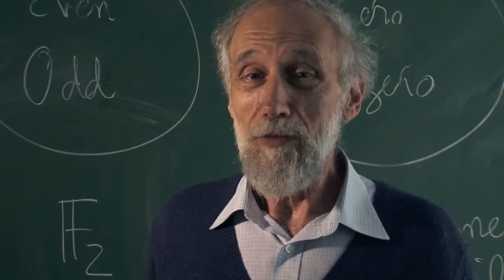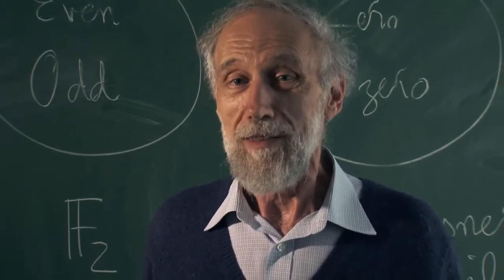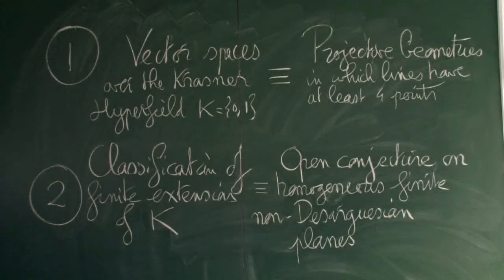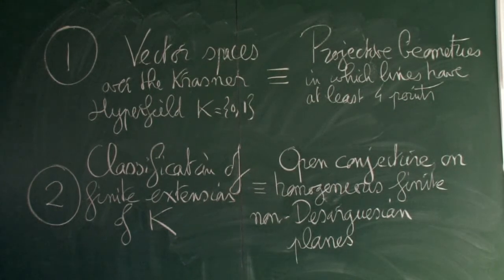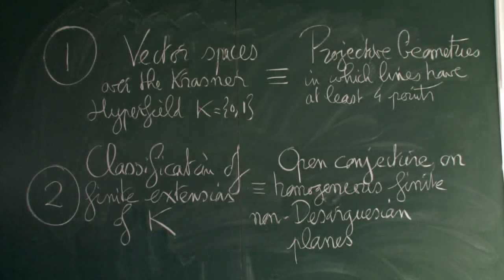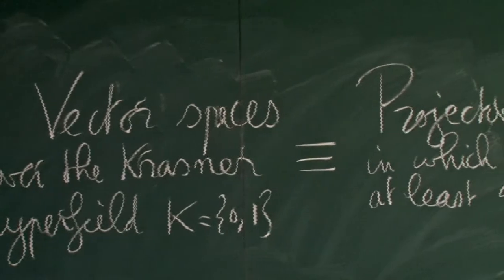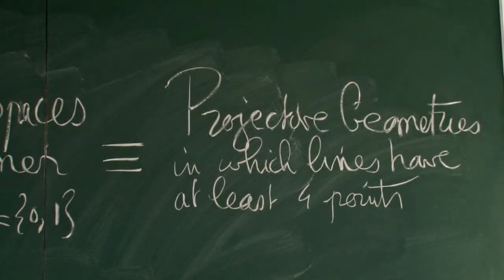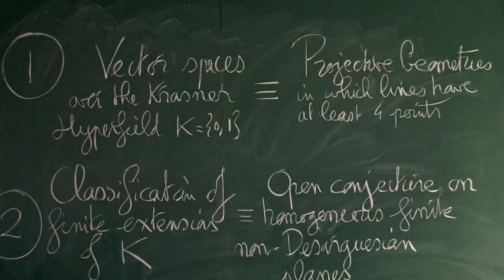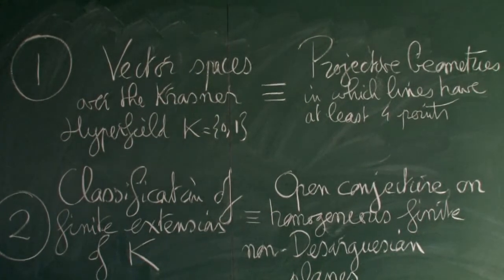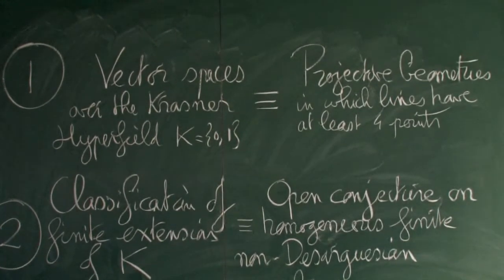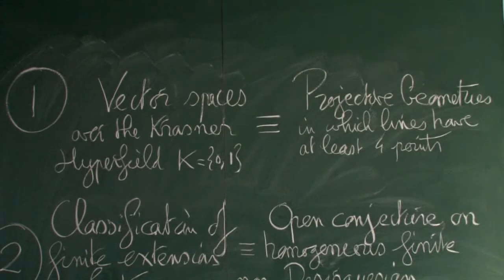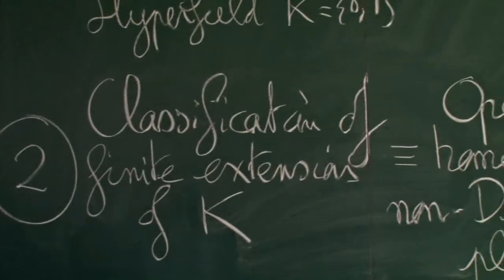These algebraic objects look very trivial at first, because they are formed with two elements, zero and one. But we found two quite remarkable things. The first, noticed by Prenowitz long ago and recast in the language of hyperfields, is that vector spaces over the Krasner hyperfield are exactly the projective geometries — exactly the axioms of ordinary projective geometry in which lines have at least four points. This connects with the work of German geometers after the war, like Carzel and Ehlers, and opens up an amazing source of results. Classifying even the finite extensions of the Krasner hyperfield is an open problem.